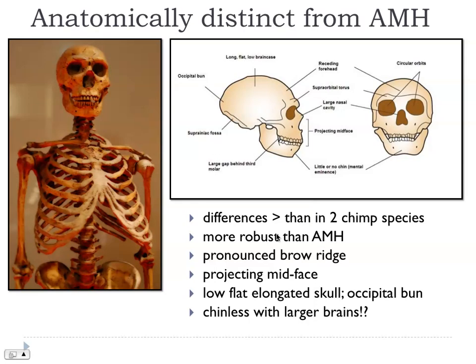They were anatomically distinct from us — these differences are actually greater than the differences between two chimpanzee species. You can see they have a brow ridge — the so-called supraorbital torus — a large nasal cavity, but hardly any chin. They have at the back of the head a so-called occipital bun, and the skeleton in general is much more robust than what we see in anatomically modern humans. In terms of brain size, they overlap with us and are probably, on average, slightly larger. An interesting variation on the theme of humanity.